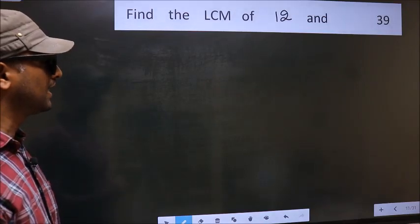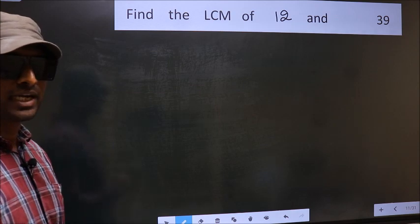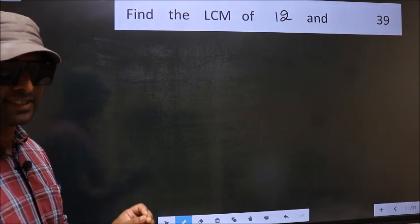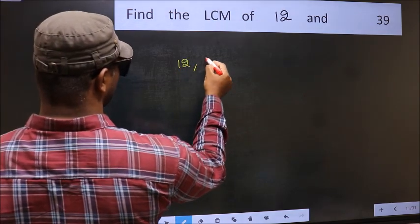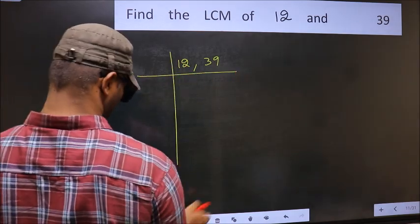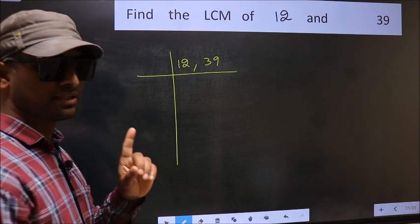Find the LCM of 12 and 39. To find the LCM, we should frame it in this way: 12, 39. This is your step 1.